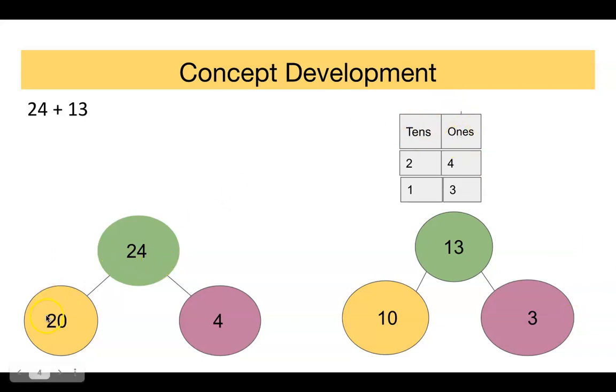So we see we have two tens. So I'm putting two there, four ones, four goes there, one ten, three ones, and that's our 13 and our 24. A real connection between the number bonds and the place value chart. And with the color coding, I think it will help our students.